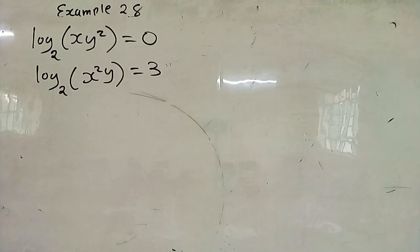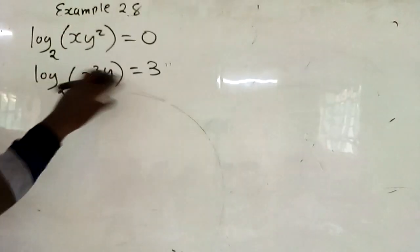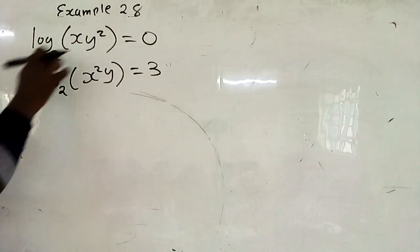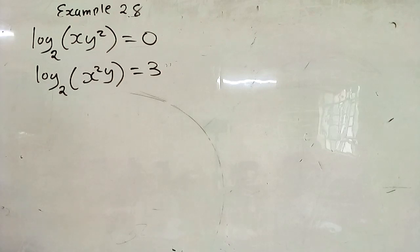What did we see from logarithm? If you have to solve this simultaneous equation, we need to get rid of the logs. You can remember: what was 0? Zero was log 1 to any base. Zero was log 1 to any base.